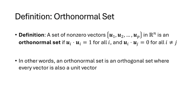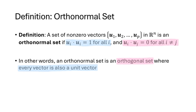In this lecture we're talking about orthonormal sets. An orthonormal set is a set of vectors u1 through up where ui dot ui equals 1, and ui dot uj equals 0 whenever i is not equal to j. In other words, an orthonormal set is an orthogonal set where every vector is also a unit vector.